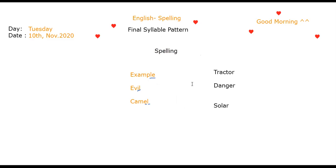So this is for the L-E sound. On the other side, if I give you tractor, danger, solar — all of them give you the R sound. But when you write tractor, it ends with O-R; danger ends with E-R; solar ends with A-R. And they all give you the same R sound when you read them, although they are different in writing. This is what we are going to learn together: final syllable pattern.